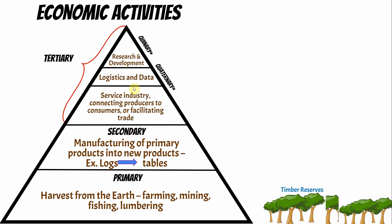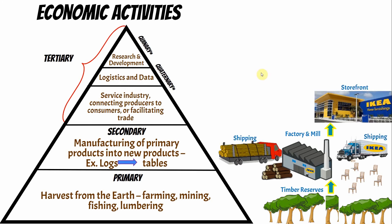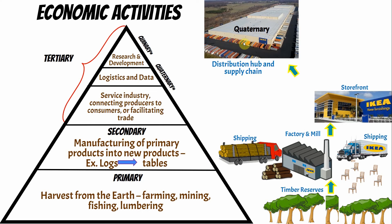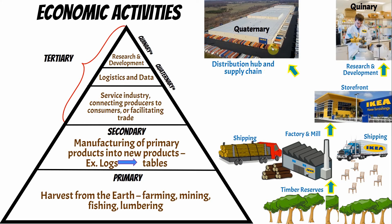A great example is IKEA. IKEA makes furniture out of trees. You take the trees — the lumberjack cuts them down (primary), they're put on trucks to the factory (trucks are a tertiary service), and the factory and mill does the manufacturing, which is secondary. Inside IKEA there's also a distribution center — someone working on moving your Billy table more efficiently — and someone doing R&D in a lab coat trying to make better chairs and bookshelves. So we can see all three economic sectors operating within one company.